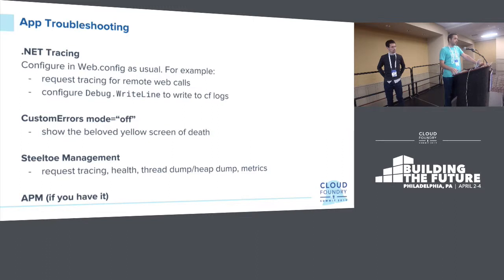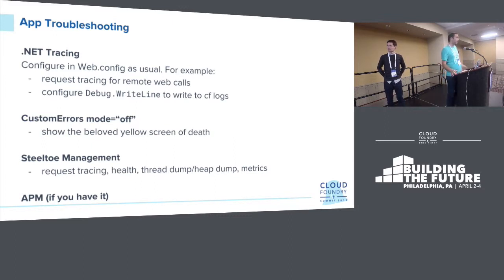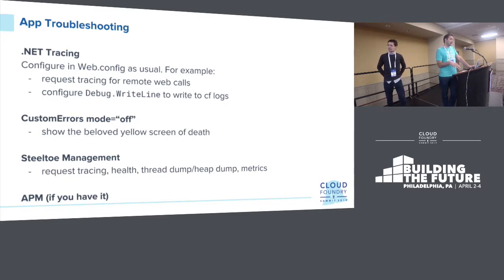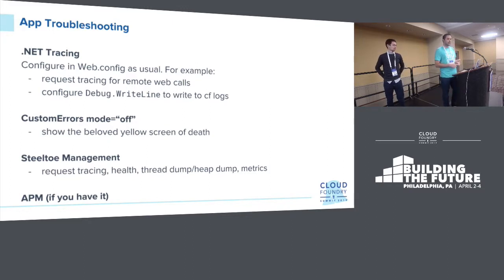Custom errors mode — if your application just doesn't start at all, go into web.config, turn custom errors mode off and see the yellow screen of death. Only do that temporarily; don't do that in production. Steeltoe has a management set of endpoints that can really help — they have request tracing, health, endpoints for getting thread dumps and heap dumps from your application. They also emit metrics like garbage collection directly to the Firehose.